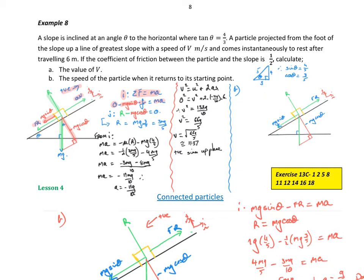In the j direction, I've got the reaction force acting away from the plane, and mg cos theta acting in the opposite direction. So R minus mg cos theta equals zero because there's no motion off the plane, so R equals mg cos theta. Now let's think about sine theta and cos theta. I know tan theta is opposite over adjacent, which means using Pythagoras I get a 3-4-5 triangle. So sine theta equals 4 fifths, cos theta equals 3 fifths.